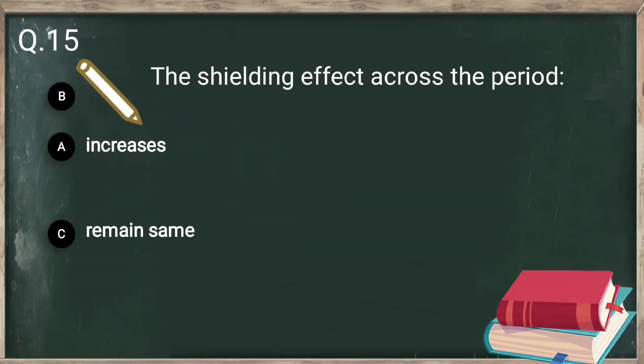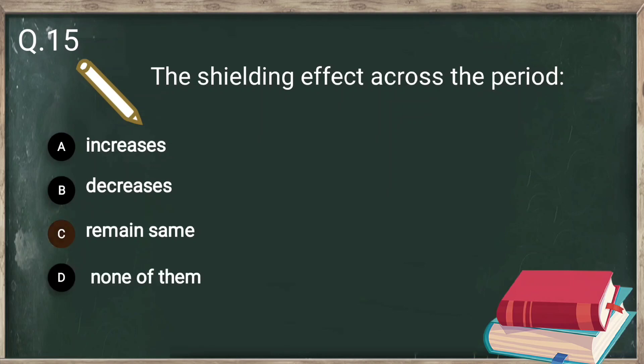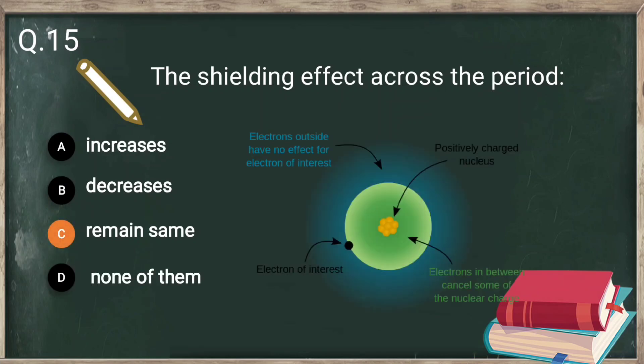Question number 15: the shielding effect across a period remains the same. The shielding effect refers to the fact that the nucleus cannot attract its valence electrons with full force due to the inner shell electrons present between the nucleus and the valence shell electrons. Across a period, all elements have the same number of inner shell electrons, that is why the shielding effect across the period remains the same.